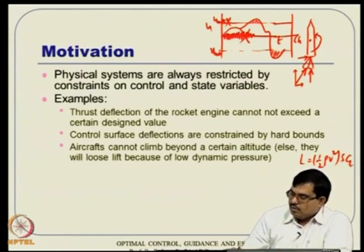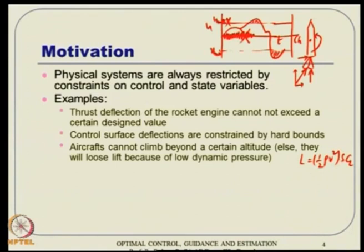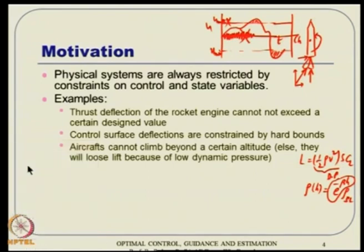As you keep increasing height, rho decreases very fast. Ultimately rho will be so small that lift L will be very small. By the basic principle, lift must be at least equal to weight so that the aircraft can be sustained in the air. If lift becomes smaller than weight, the aircraft will start coming down. So you cannot sustain lift — that is why state constraints are also important. And if altitude is very low, the drag, which is D equals one-half rho V-squared times S times C_D, will be very large due to high dynamic pressure.